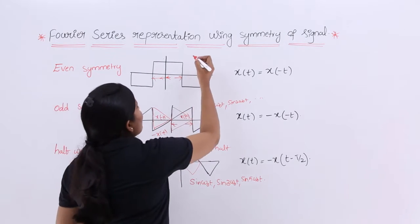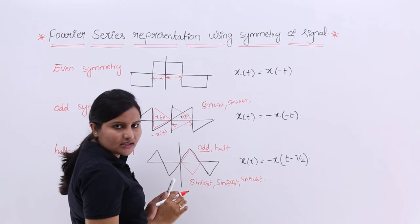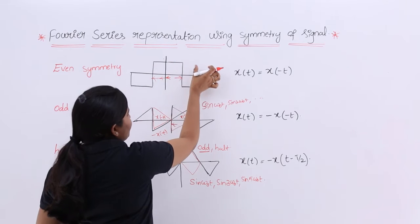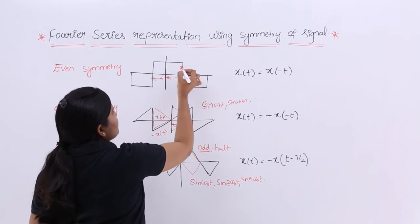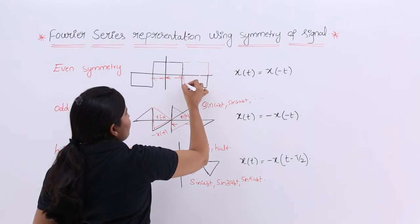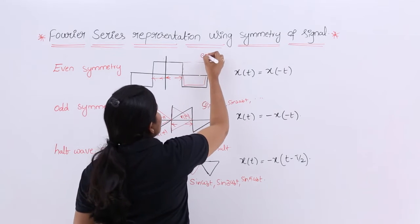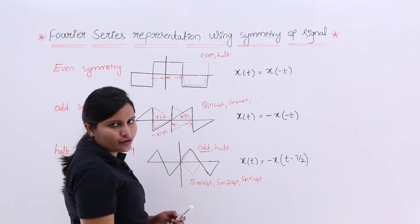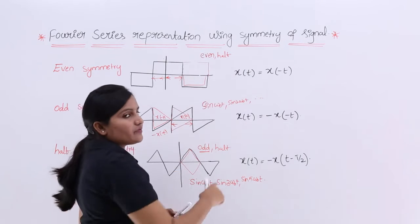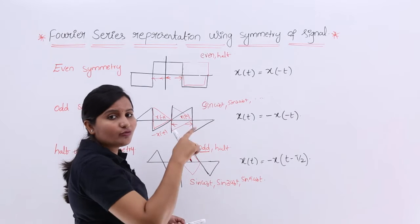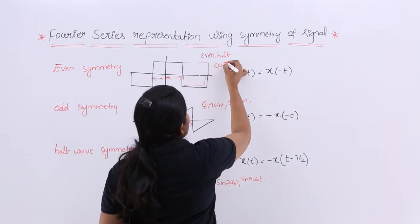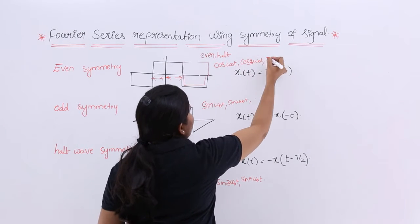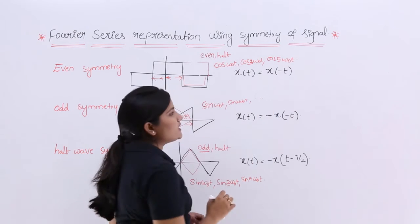Coming to this signal: it covers all cosine terms. To check half wave symmetry, just shift and reverse. If you shift this portion to here and reverse it, you get the same signal — so this signal satisfies both even symmetry and half wave symmetry. Because it satisfies even symmetry, cosine terms are present. And because it also satisfies half wave symmetry, only odd harmonics of cosine terms are present — that means cos(ω₀t), cos(3ω₀t), cos(5ω₀t) are present in the Fourier series representation.